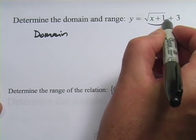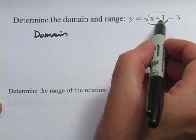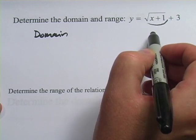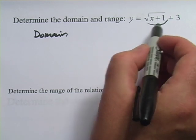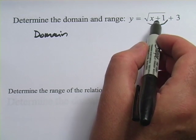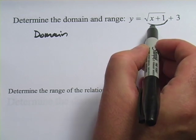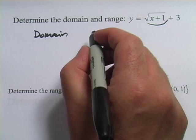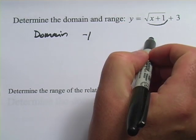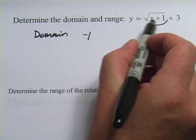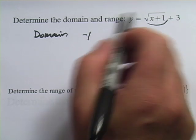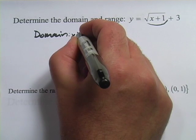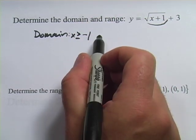Anything that makes what's under the square root symbol negative is not going to work. For example, if I put in negative 2 for x, negative 2 plus 1 would be negative 1 — you can't take that square root. To figure out exactly what the domain is, I ask: where will I get 0 under the radical? If I put negative 1 for x, negative 1 plus 1 is 0, so negative 1 works just barely. Anything more negative than that won't work, and anything greater than or equal to negative 1 will work. So x must be greater than or equal to negative 1 — that is my domain.